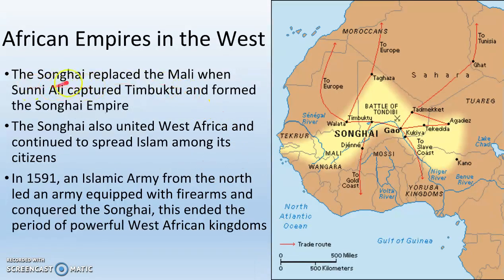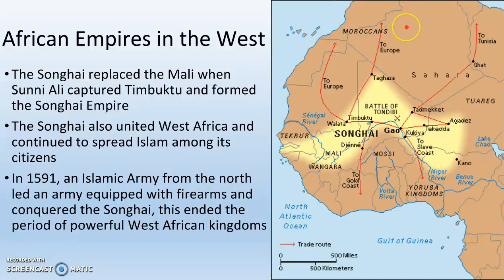Mali is going to be replaced by the Songhai, led by a man named Sunni Ali. He is Muslim, and he's going to capture Timbuktu and form the Songhai Empire. The Songhai also unite West Africa for a time and continue to spread Islam. This goes very well until 1591, when an Islamic empire from the north — from Morocco — actually invades Songhai via camels and conquers the empire using advanced firearms. This pretty much ends the period of powerful West African kingdoms. We still have kingdoms here, but they are largely under control of Muslims from the north.